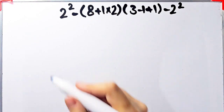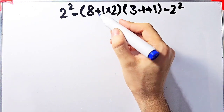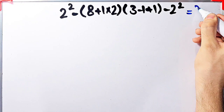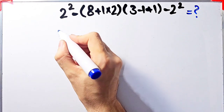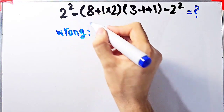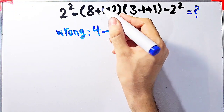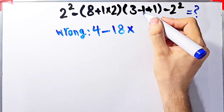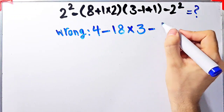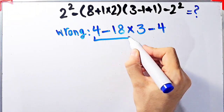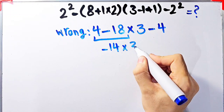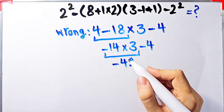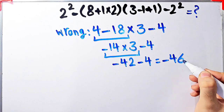Let's solve another question. 2 to the power of 2 minus open parenthesis 8 plus 1 times 2 close parenthesis, then times open parenthesis 3 minus 1 plus 1 close parenthesis, minus 2 to the power of 2. Some people solve this question by starting from the left without paying attention to the priority of operations. They compute 2 to the power of 2 as 4, then 4 minus 8 plus 1 which equals 9, times 2 equals 18, giving 4 minus 18, then times 3 minus 1 plus 1 which equals 3, then minus 4, getting negative 14 times 3 equals negative 42, and negative 42 minus 4 equals negative 46. They say the final answer equals negative 46, but this answer is definitely wrong.